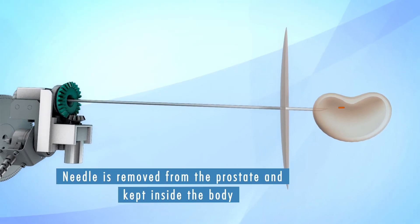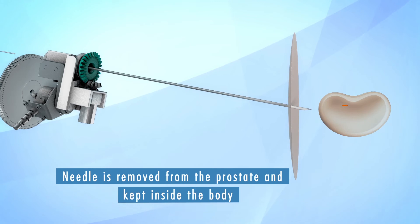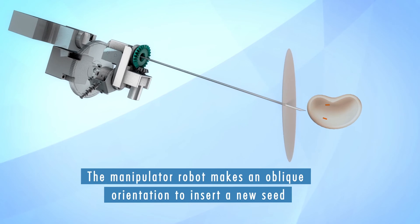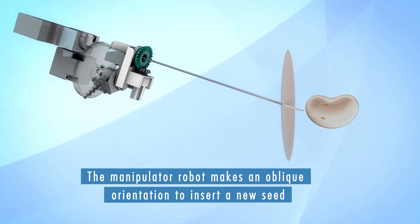Robotized prostate brachytherapy exploits the mobility of the robot operator for insertion from a single point of contact through the perineum to reach multiple targets using one needle in the prostate.